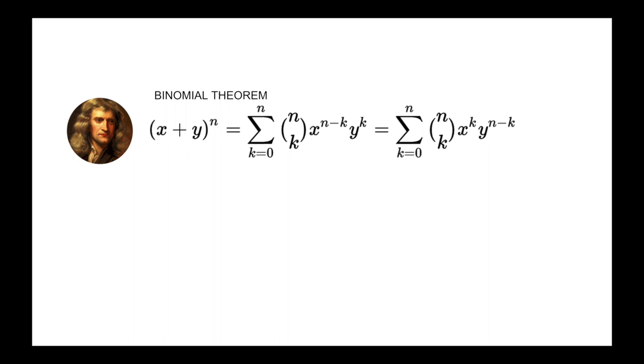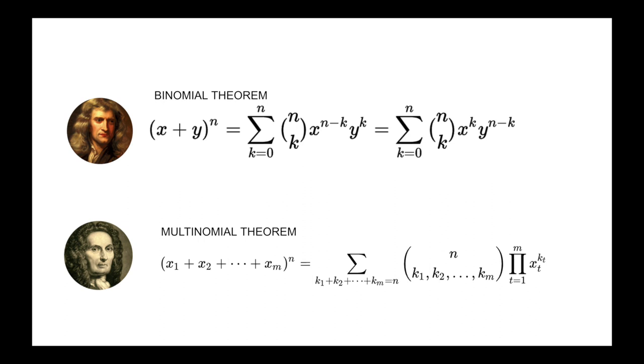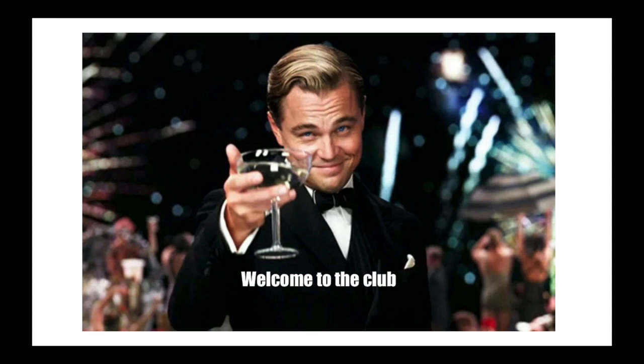But let's prove it: Isaac Newton figured out the binomial theorem, whereas Abraham was able to extend it to the multinomial theorem. When the Royal Society heard about this, they said 'welcome to the club.'